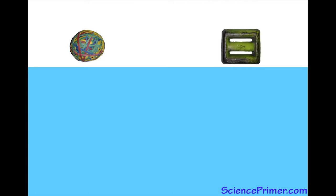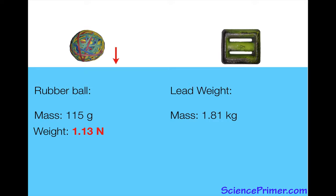So let's consider two objects. A rubber ball that has a mass of 115 grams. We can calculate its weight, which in this case is 1.13 newtons. And a lead weight, 4 pound lead weight in metric system. It's got a mass of 1.81 kilograms.